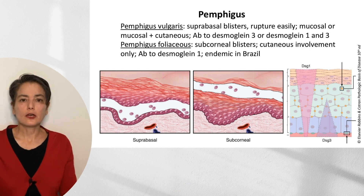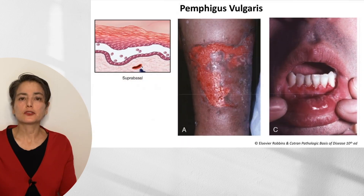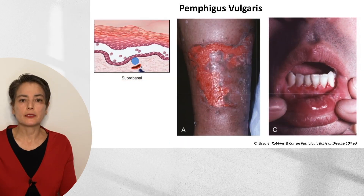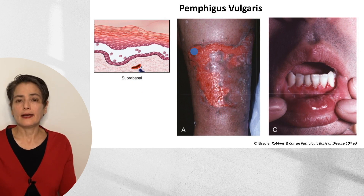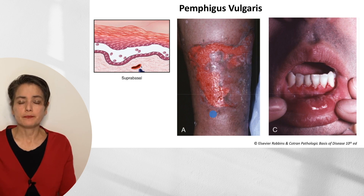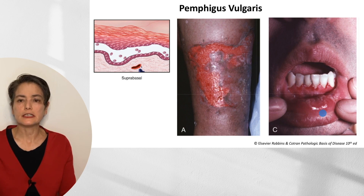Looking at pemphigus vulgaris — remember, suprabasal blisters — here you can see this has been unroofed. It's a fairly extensive, erythematous blister, and as you would expect, this patient is at risk for infection. These individuals can also have mucosal erosions, which you can see here — that's not something you would see in pemphigus foliaceous.